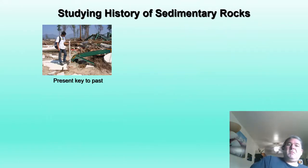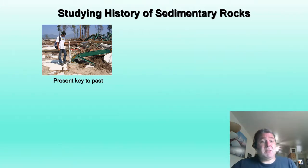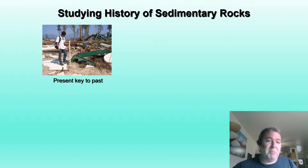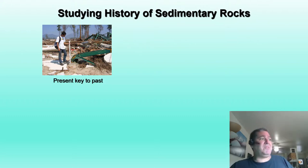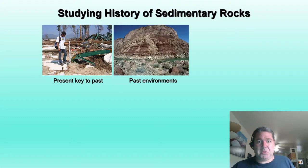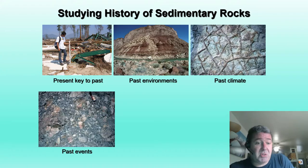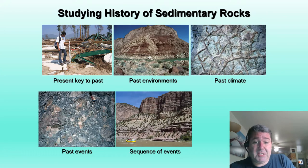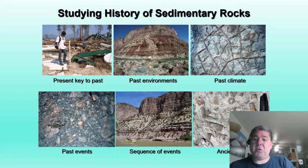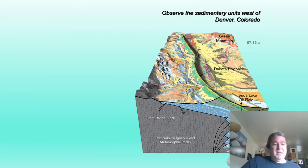Studying the history of sedimentary rocks, the idea is that the present is the key to the past — the same processes we see today have been going on in the past, from slow uniformitarianism to catastrophic events like volcanic eruptions and landslides. From sedimentary rocks we can learn about past environments, past climates, events and sequences of events in Earth's history, and of course the history of ancient life on our planet.